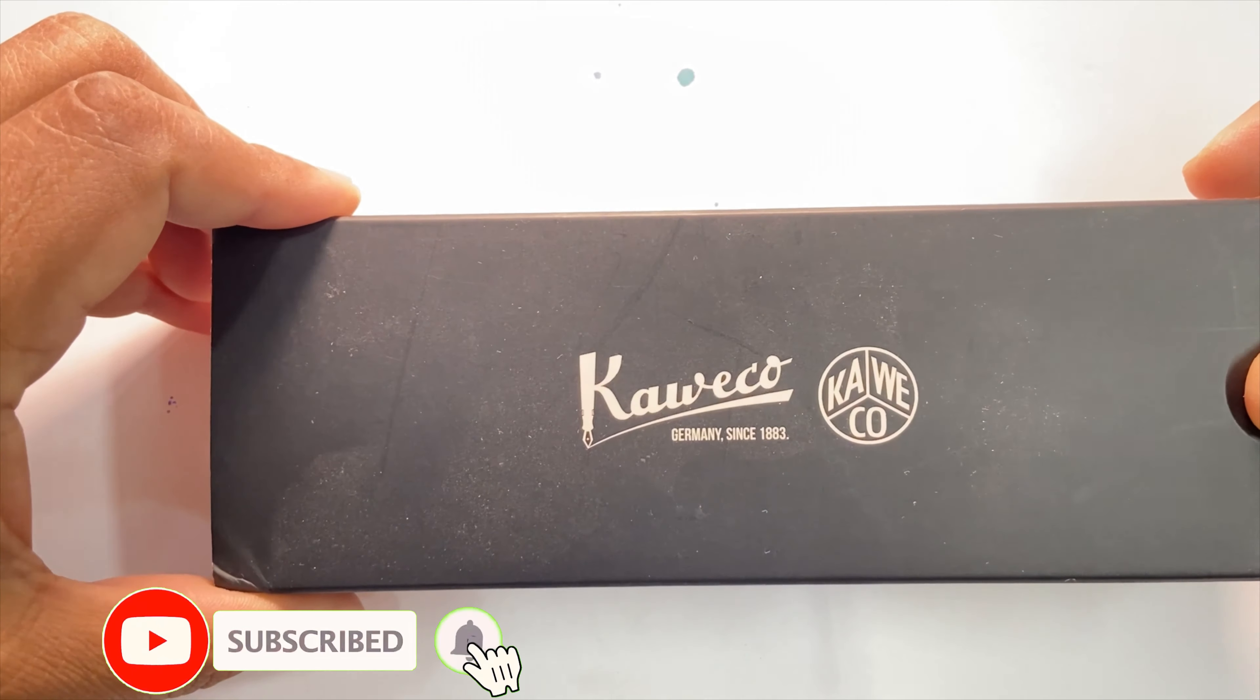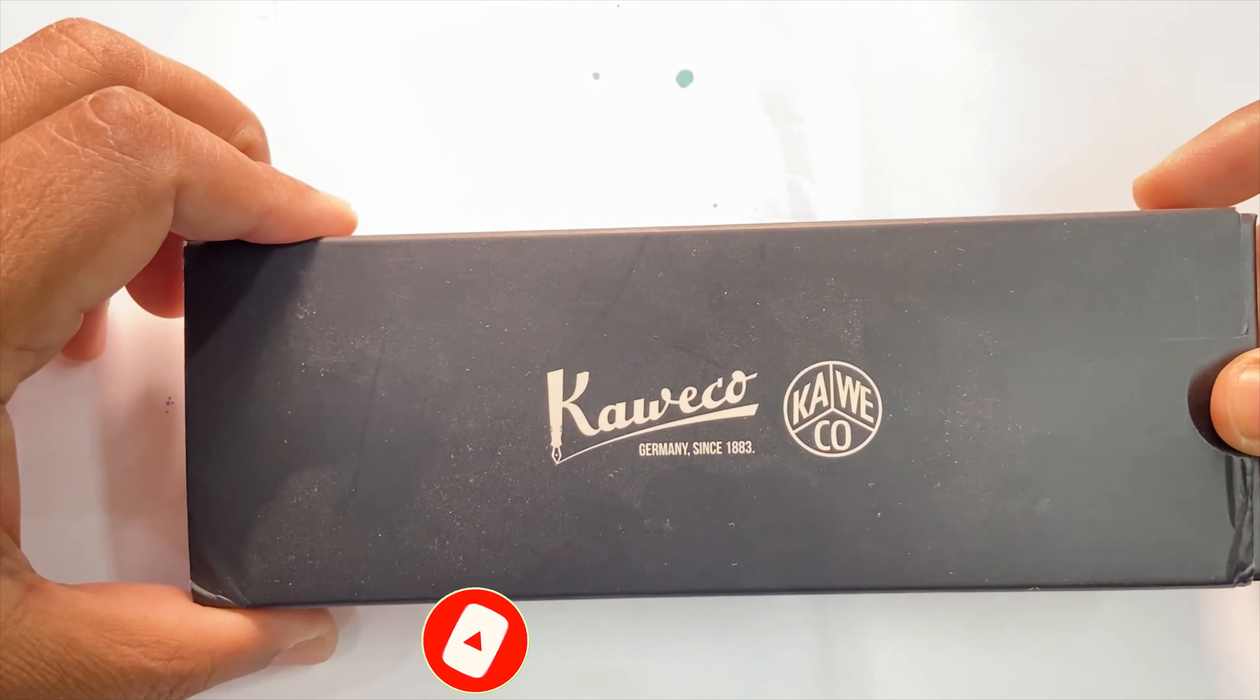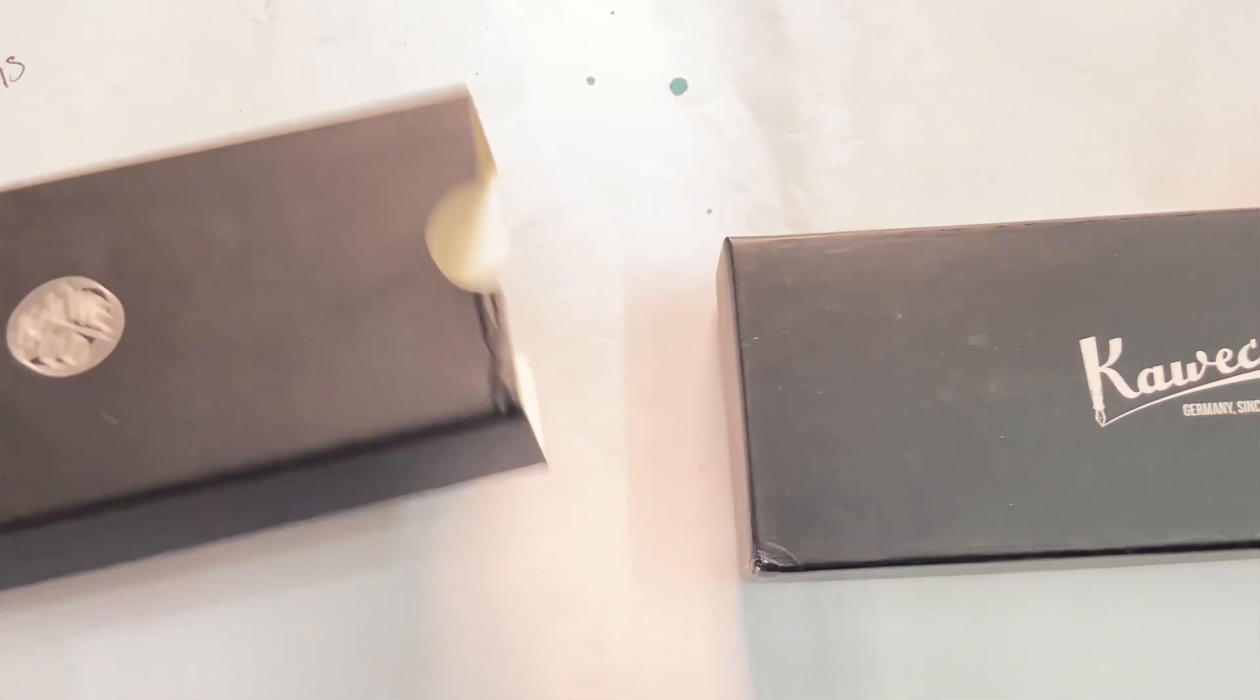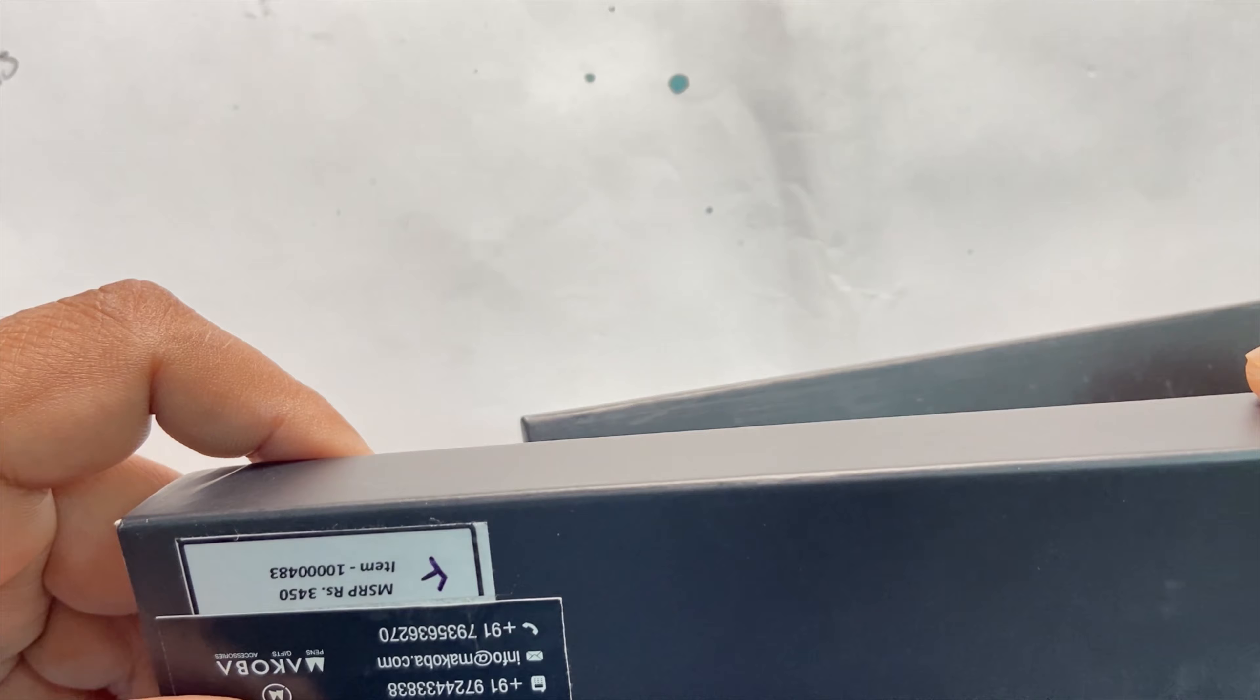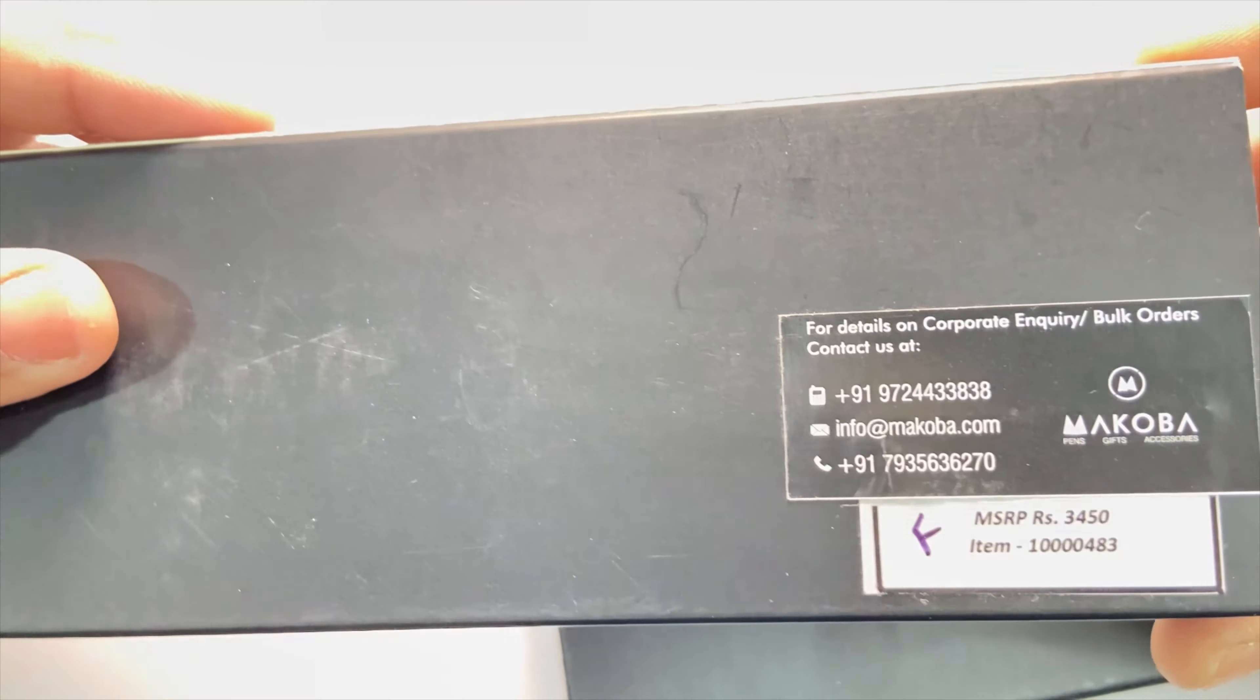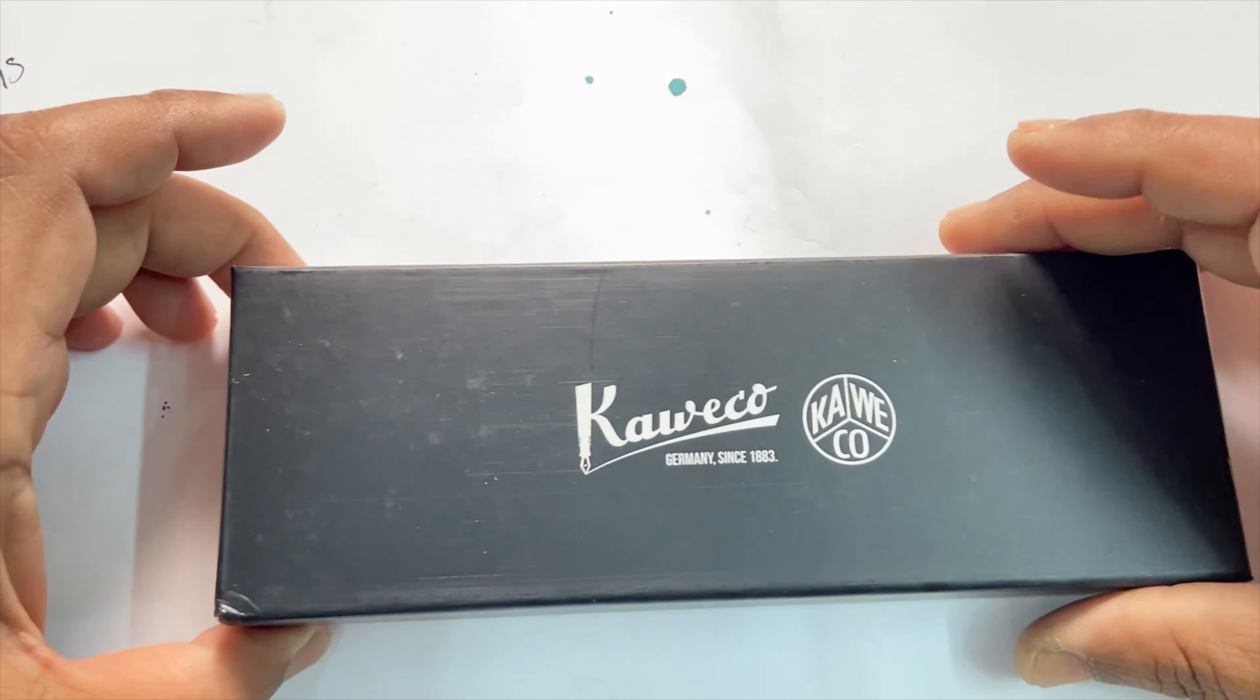Well friends, my Kaweco Sport in black plastic with a fine nib has come in a cardboard sleeved box like this. Let me open the sleeve. The outer sleeve contains some important information and the price at which the product is available in India. So let me keep it aside, and this is the box.